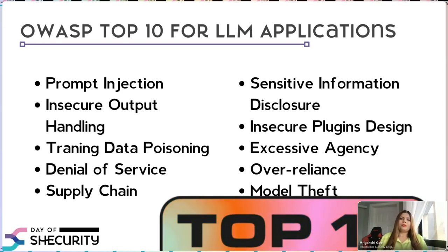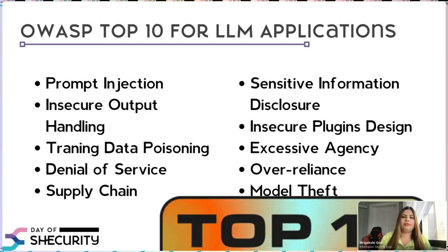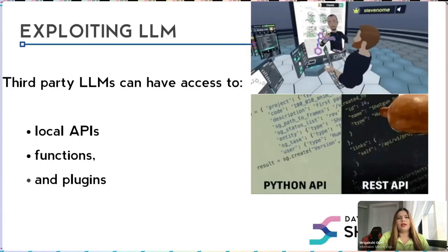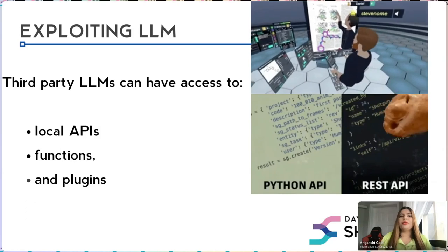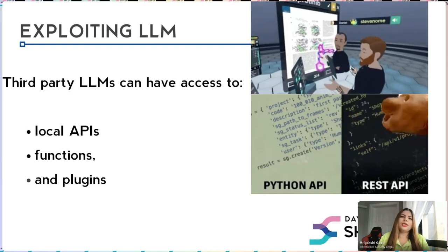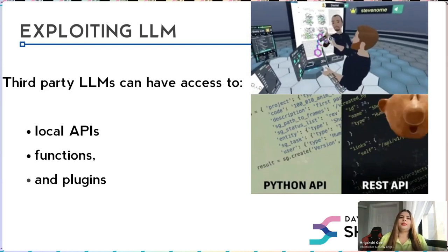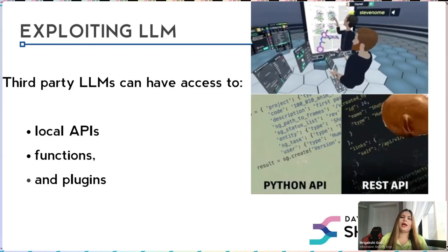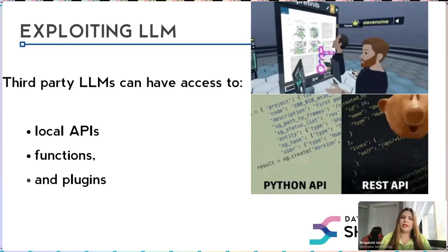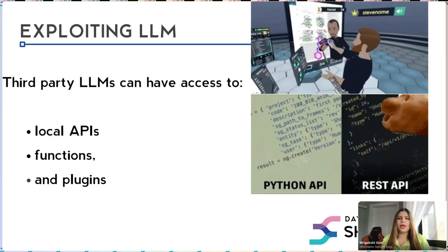Then model theft — there's a lot of content on the internet about it. Many attackers want to copy the entire model of an LLM, which falls under model theft. Next, exploiting LLM. When we want to exploit an LLM, we look into local APIs. Third-party LLMs can have access to local APIs, functions, and plugins, which is the main criteria for how attackers might work here.